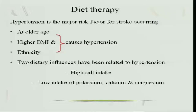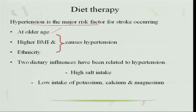Diet therapy is important here as hypertension is a major risk factor for stroke. This is generally common in older age because from childhood, if you are taking a faulty diet, by the time the individual reaches 40-45 the atherosclerotic plaque may become thicker and thicker. People with higher BMI — that is, those who are obese — are also prone to hypertension. Sometimes it is ethnic: some races are prone to atherosclerosis, high triglyceride levels, and heart attacks.